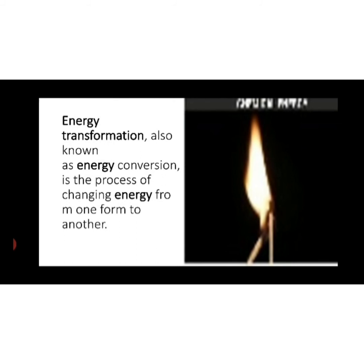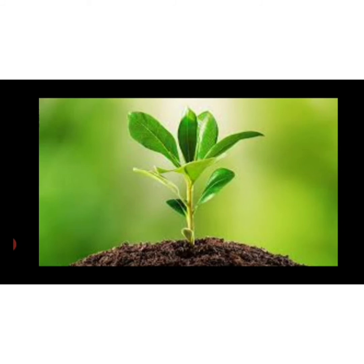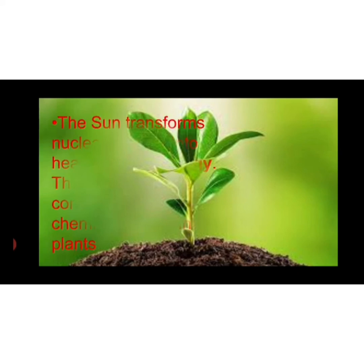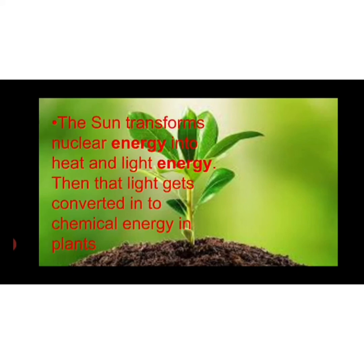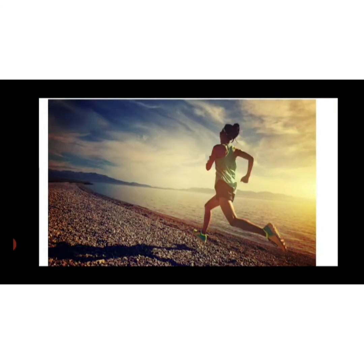You can see this plant. The green color of the plant means it has chlorophyll. Plants also convert energy — light energy into chemical energy. The solar energy from the sun reaches the plant, and then the chlorophyll of the plant absorbs that energy, and with the help of a photochemical reaction it is converted into chemical energy. The sun transforms nuclear energy into heat and light energy, and then that light energy gets converted into chemical energy in plants through the process known as photosynthesis.